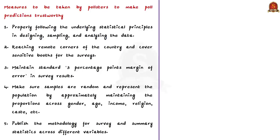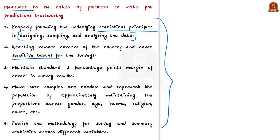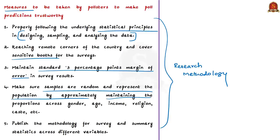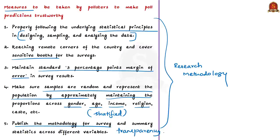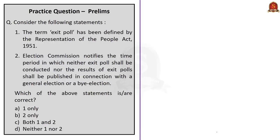To make poll predictions trustworthy, certain measures need to be followed by pollsters. They should properly follow underlying statistical principles in designing, sampling and analyzing data. They should reach remote corners of the country and cover sensitive booths. They should maintain a standard 3 percentage point margin of error. Samples must be random and represent the population by approximately maintaining proportions across gender, age, income, religion, caste, etc. They should also publish their survey methodology and summary statistics. In this discussion, we saw what is an exit poll, what is an opinion poll, and various issues associated with these polls through examples.